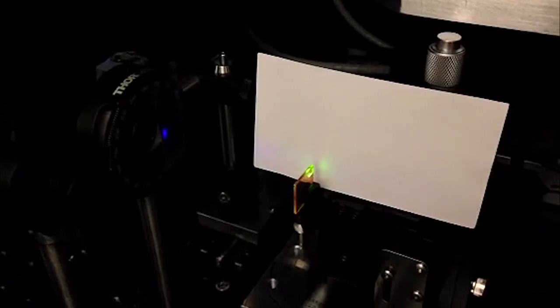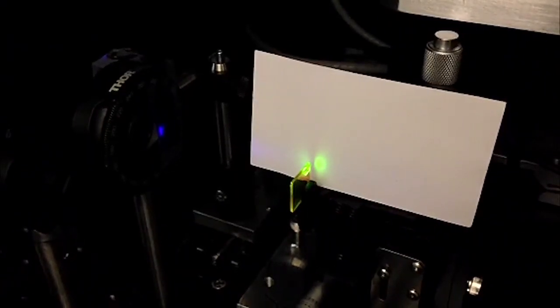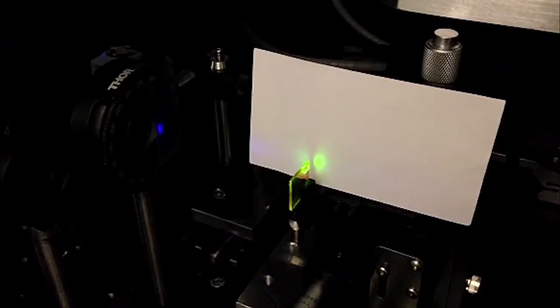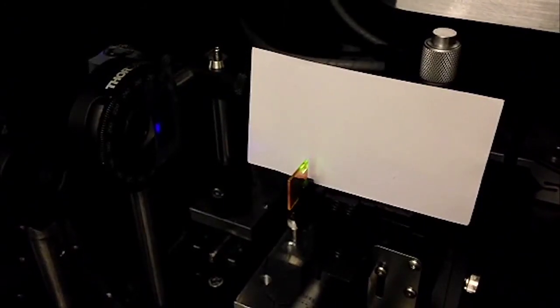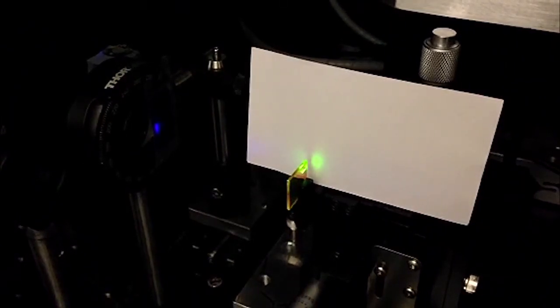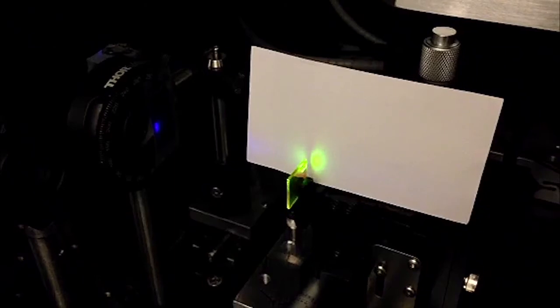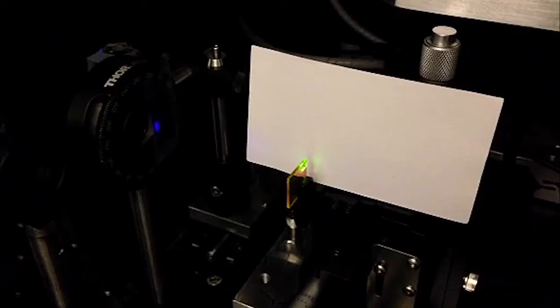The excitation laser beam will hit the film surface and the ASE will come out of the glass edge and project onto this white card. I'm going to adjust the laser power from below the ASE threshold to above the threshold. We will see no ASE when the power is below the threshold but ASE above the threshold.